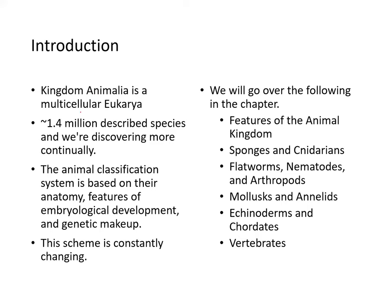Kingdom Animalia is multicellular eukaryota. There are about 1.4 million described species, and we're constantly discovering more. The animal classification system is based on their anatomy, features of embryological development, and their genetic makeup. And this scheme is also constantly changing.